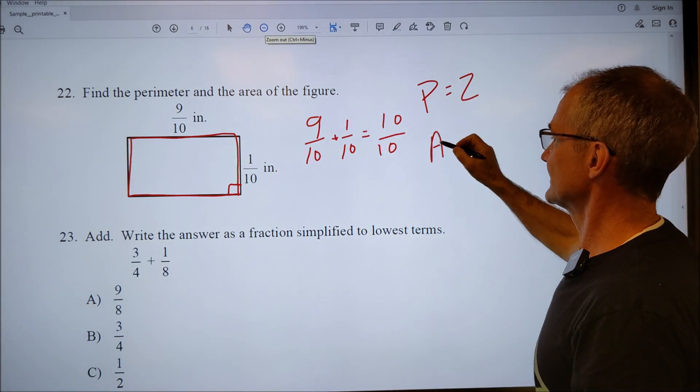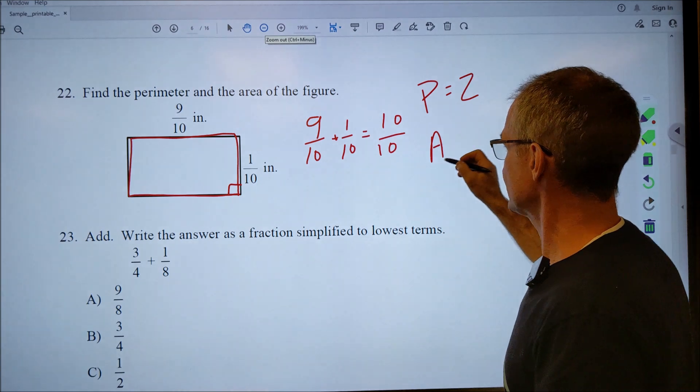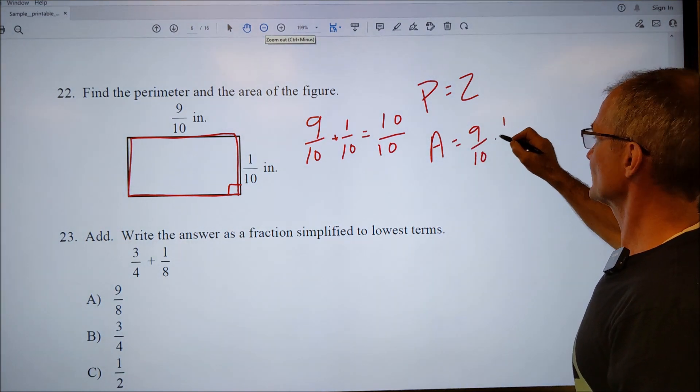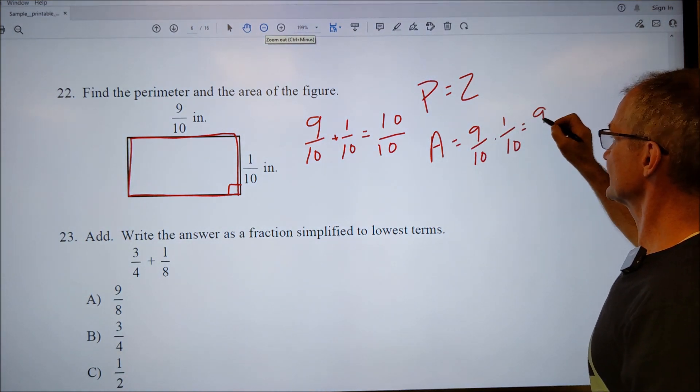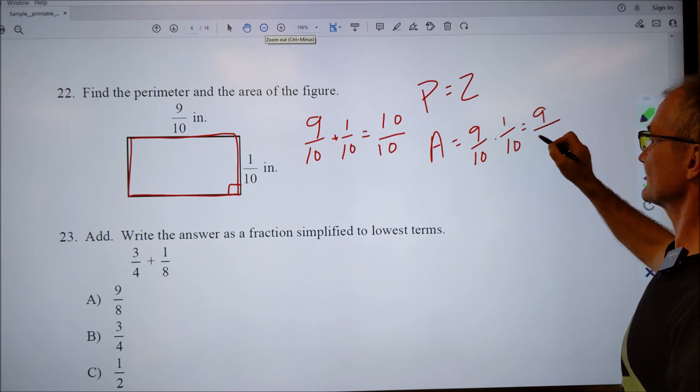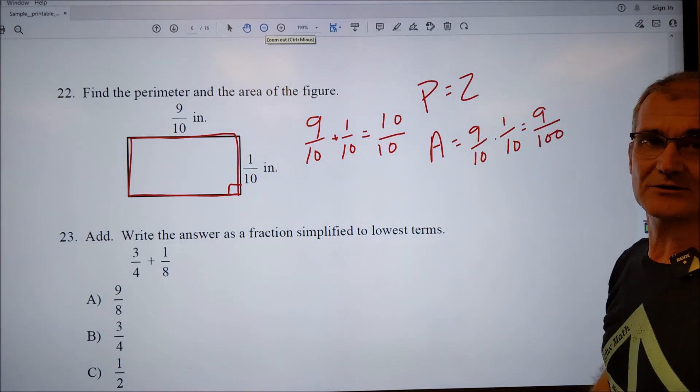The area is length times width. It's going to be nine tenths times one tenth, which is going to be equal to nine times one over ten times ten or nine one hundredths.